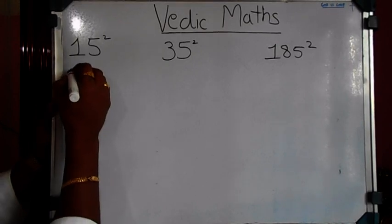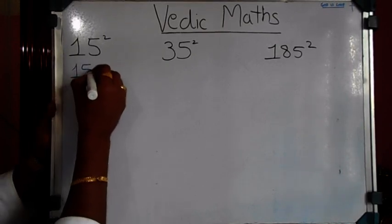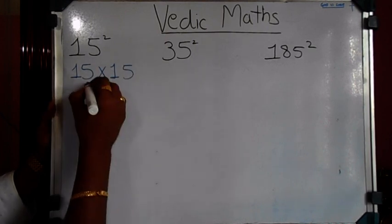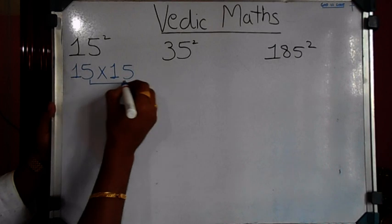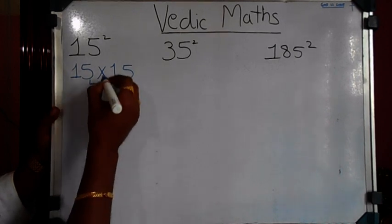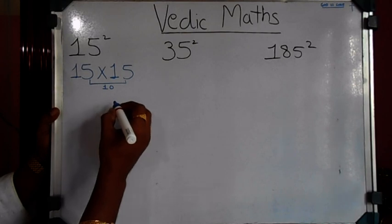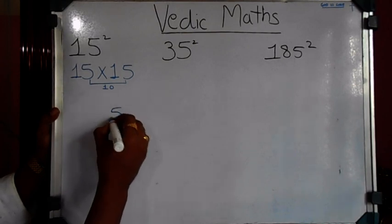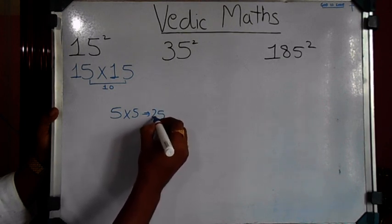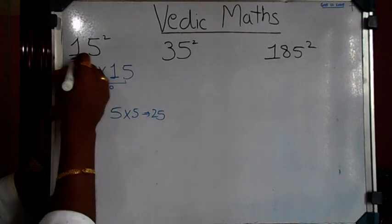For 15 multiplied by 15, observe that 5 plus 5 has a sum of 10. For this type of number, first take 5 into 5, which gives 25, and then you have this 1 here.